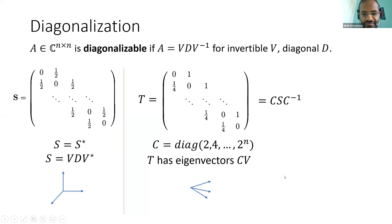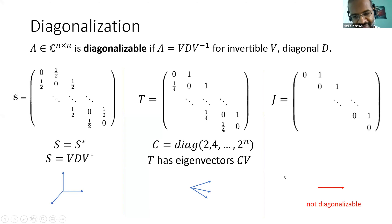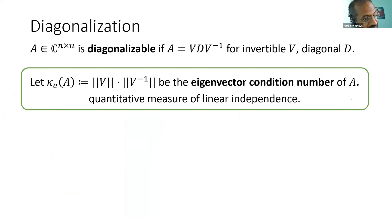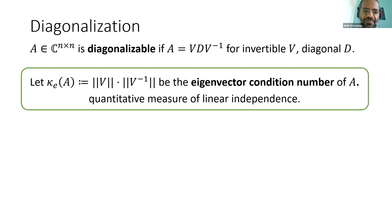If you take the limit of this process you get a Jordan block, which is not diagonalizable at all — it only has one right eigenvector. What I want to study is a quantitative notion of diagonalizability. I'll introduce a parameter that measures how diagonalizable a matrix is: the eigenvector condition number. Suppose a matrix is diagonalizable; its eigenvector condition number is the norm of V times the norm of V inverse, where V is the similarity in the diagonalization, taking the infimum over all possible scalings.